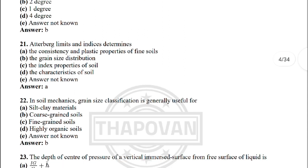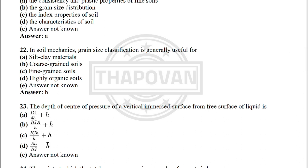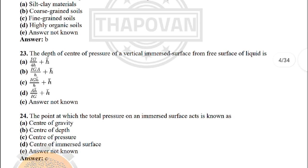Next: Atterberg limits determine — the correct answer is: the consistency and plastic properties of fine soil. Next: in soil mechanics, grain size classification is generally useful for — the correct answer is: coarse-grained soil.